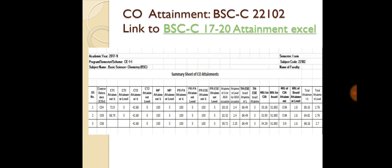For example, if the student has a score of 72.9% attainment in CT1, then he will be in level 3. In CT2, if he has 42.86%, he will be in level 0 — for level 1, he should have more than 45%. In micro-project attainment, if he has 100%, the attainment level will be 3. For PRPA, if he has 100%, he will be in level 3. For PRESE board exam, if he is having 100%, his level will be 3.